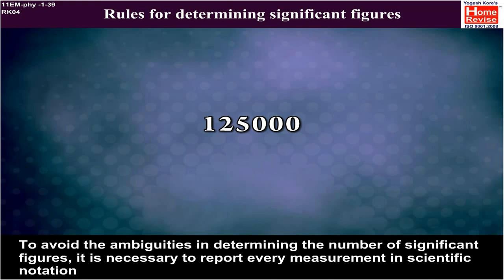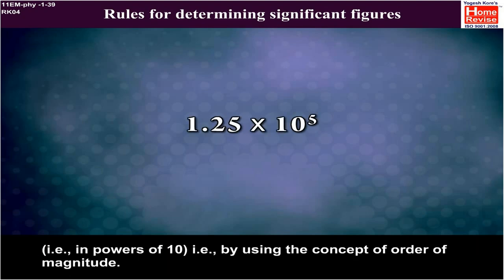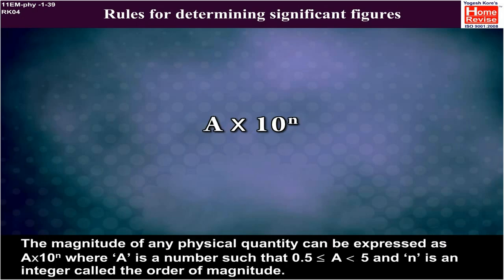To avoid the ambiguities in determining the number of significant figures, it is necessary to report every measurement in scientific notation, in powers of 10, by using the concept of order of magnitude. The magnitude of any physical quantity can be expressed as a × 10ⁿ where a is a number such that 0.5 ≤ a < 5 and n is an integer called the order of magnitude.